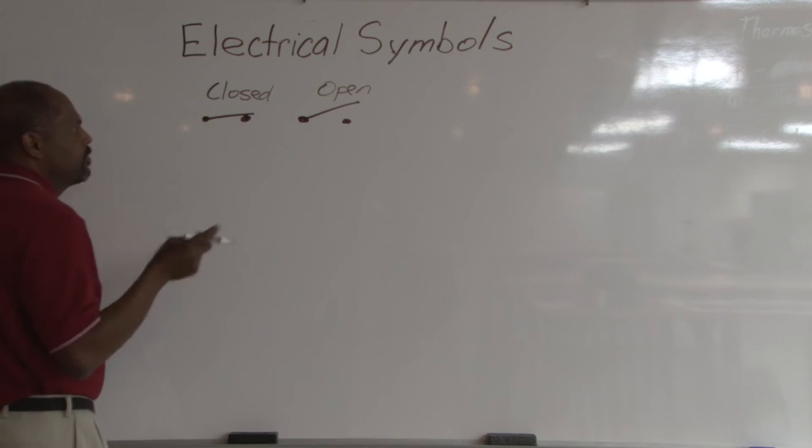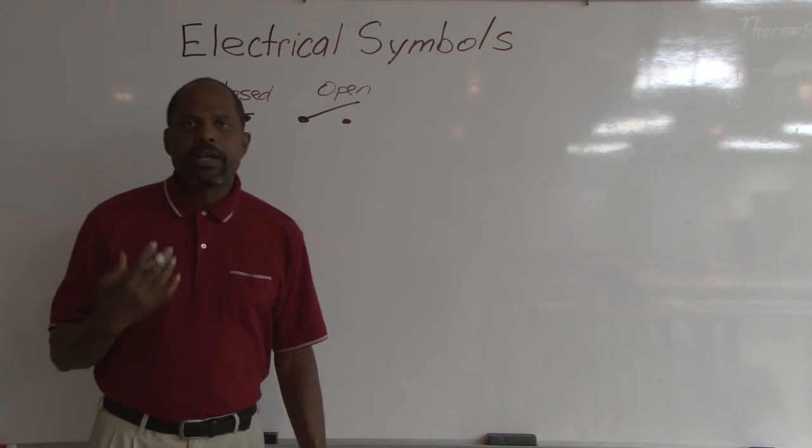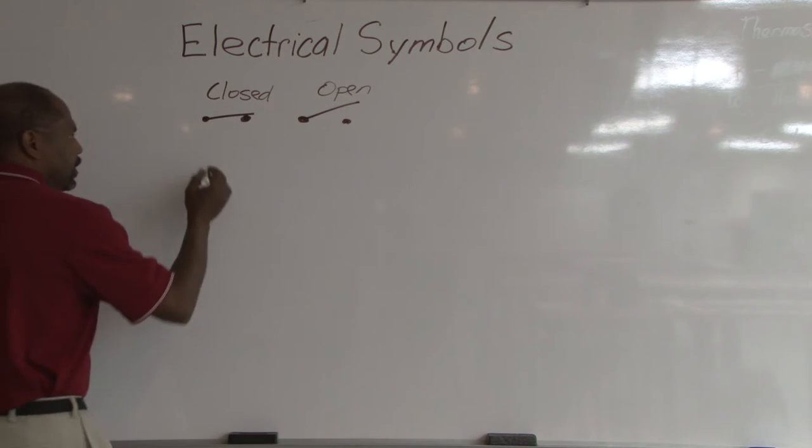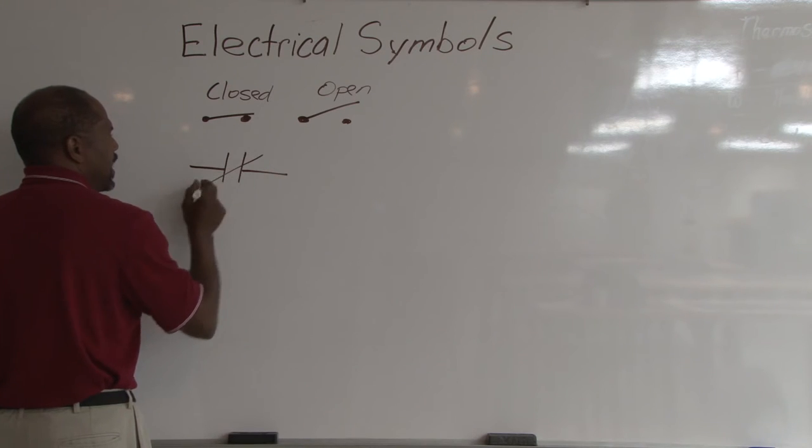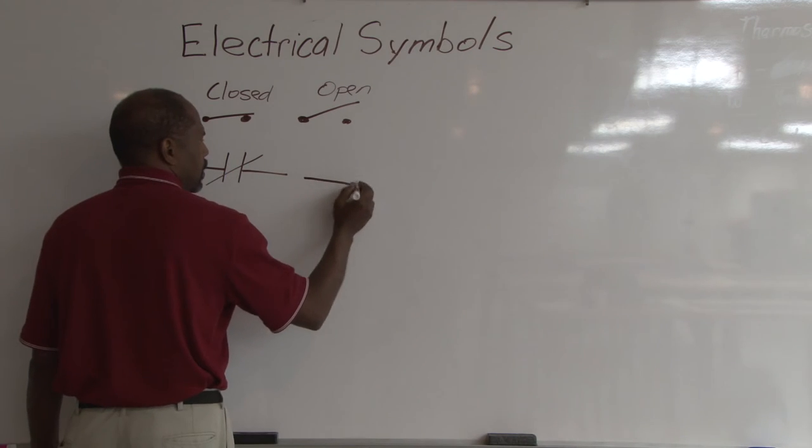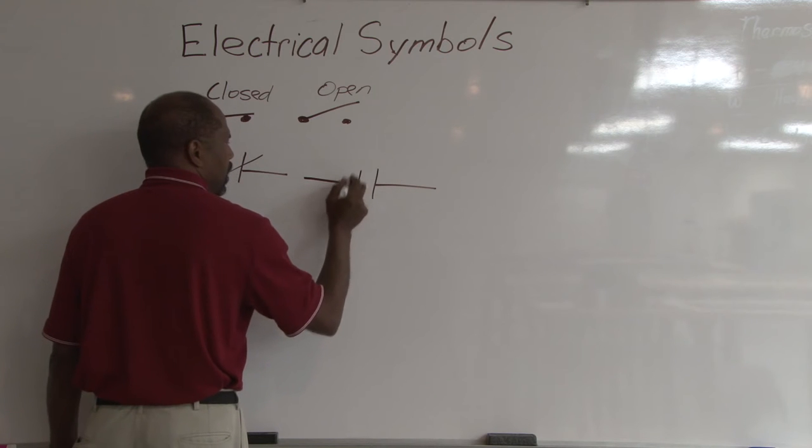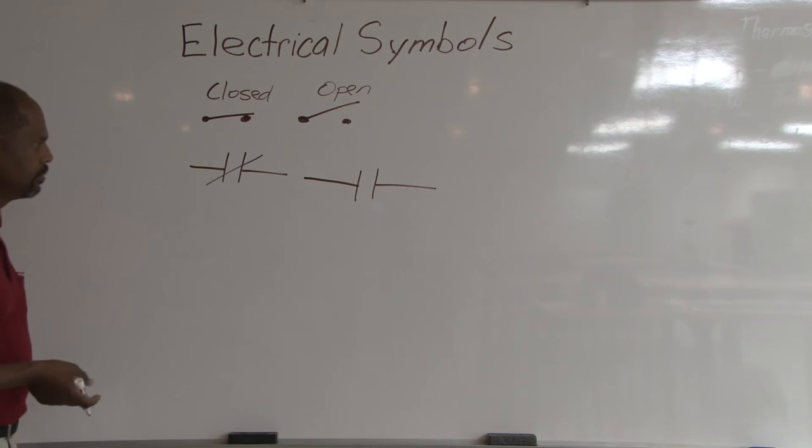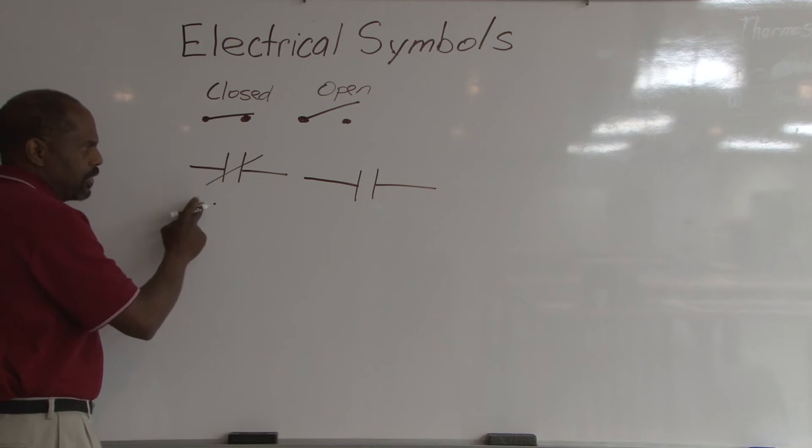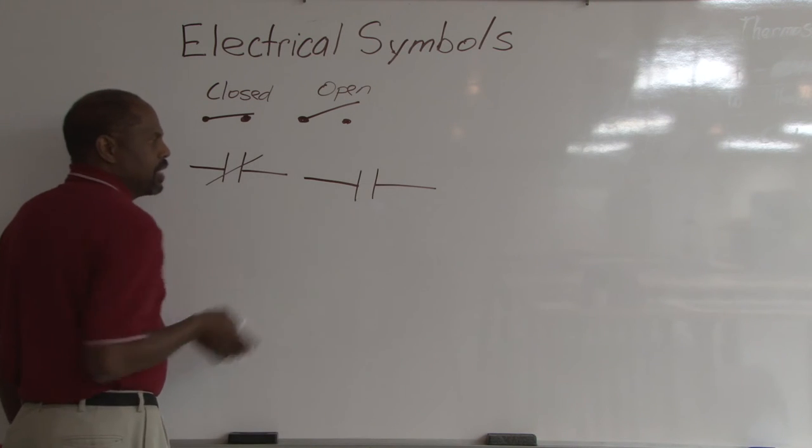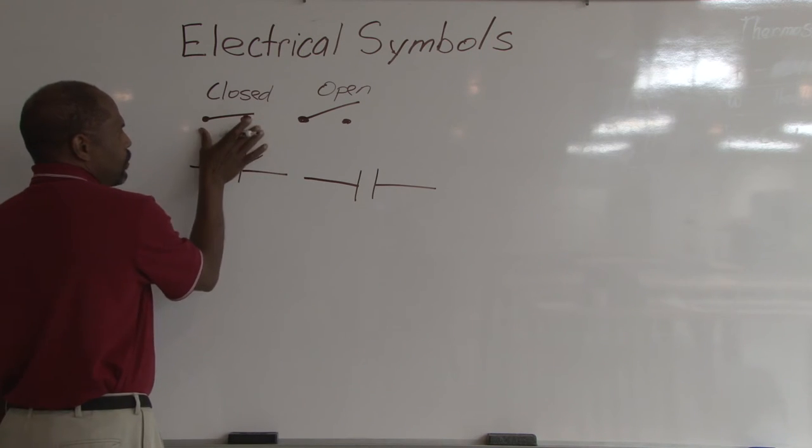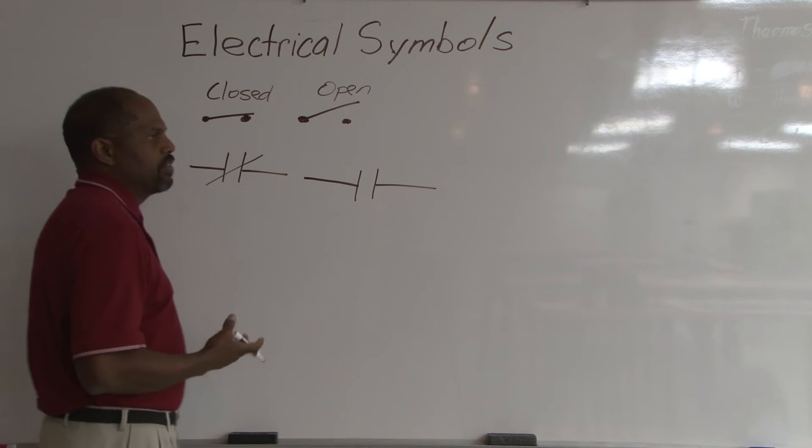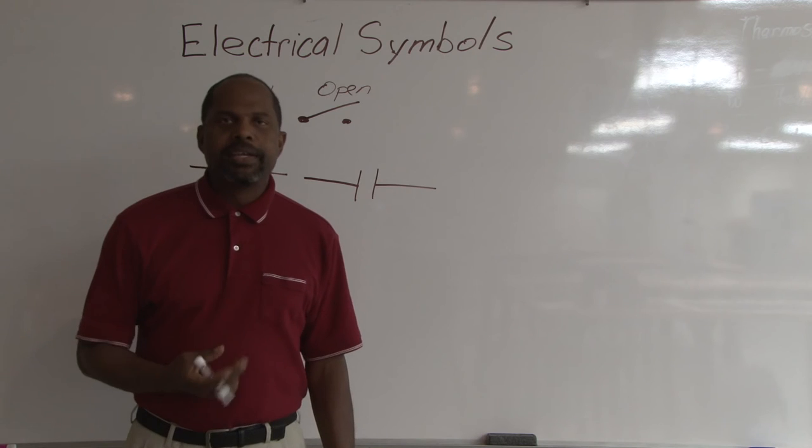Another way they can draw this, if it's a set of contacts for a contactor or a relay, will be drawn like this for a normally closed set of contacts. This will be open set of contacts. Closed with a diagonal line through the contact point, and left open when the contact is open. So I'll show you two different ways to draw a switch. This is for a switch, this is more for a contact. Contacts are found in relays and contactors.